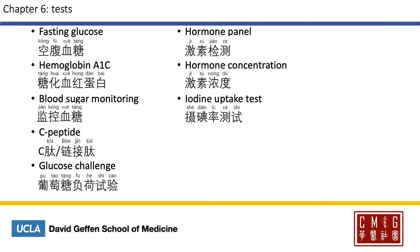Here are some tests you often see for the endocrine system. To test for fasting glucose, you're testing for 空腹血糖 — 空 meaning empty and 腹 meaning abdomen. Hemoglobin A1c is 糖化血红蛋白 — 糖化 meaning glycosylated, and 血红蛋白 is hemoglobin. Blood sugar monitoring is 监控血糖. C-peptide is C肽, or 连接肽, 连接 meaning connecting. Glucose challenge is 葡萄糖负荷试验. Hormone panel is 激素检测, and hormone concentration is 激素浓度. Iodine uptake test is 碘摄取率测试.